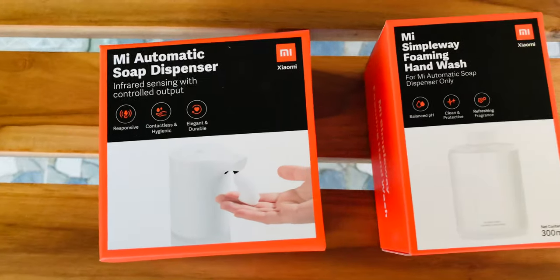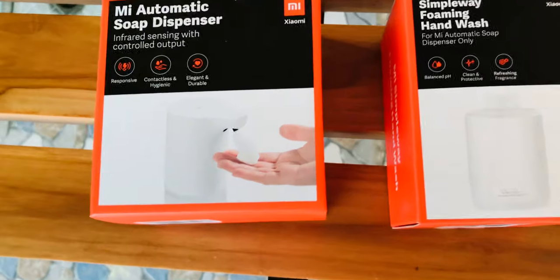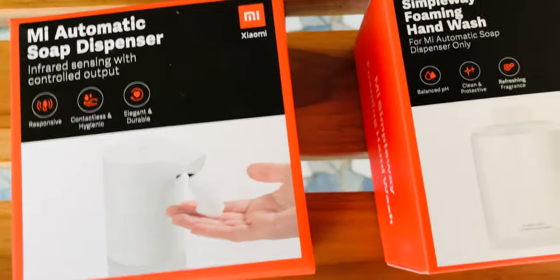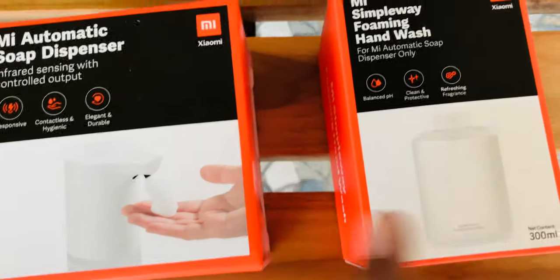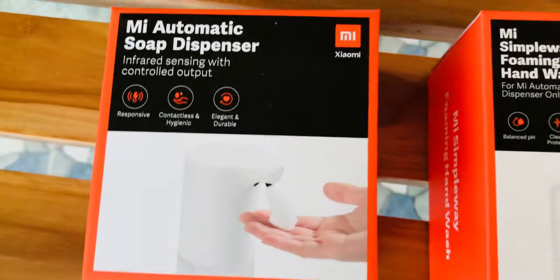Hi folks, welcome to our channel. Today I'm going to unbox the Mi Automatic Soap Dispenser. They've also provided soap wash liquid separately, which we have to buy. The main product is the dispenser, which runs on four double-A batteries. They recommend alkaline batteries.